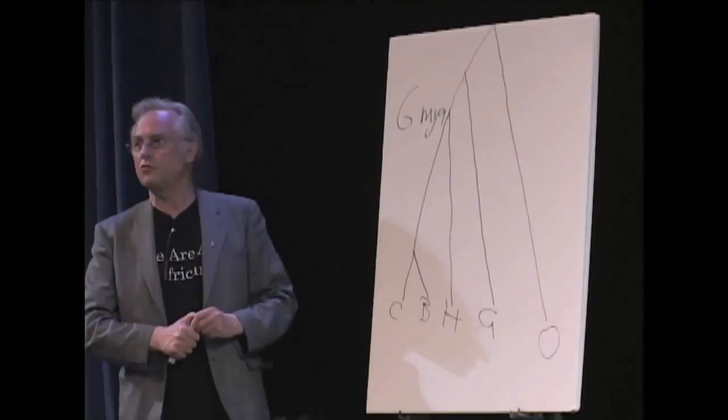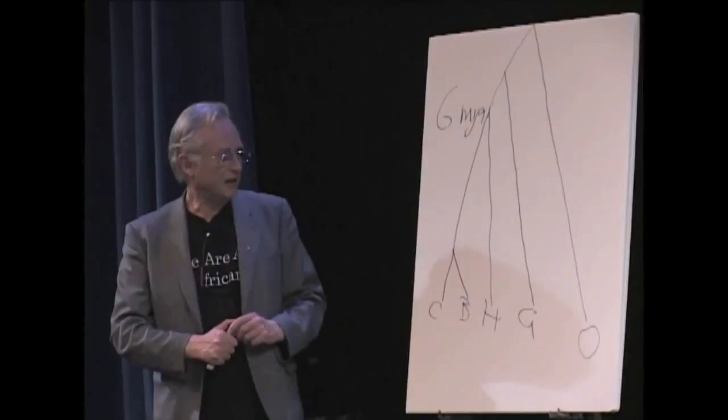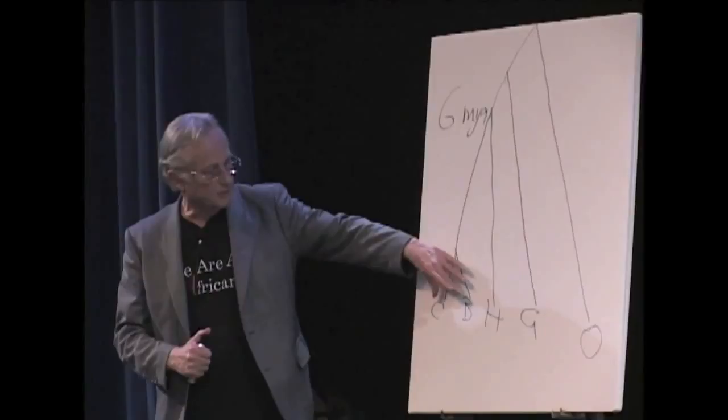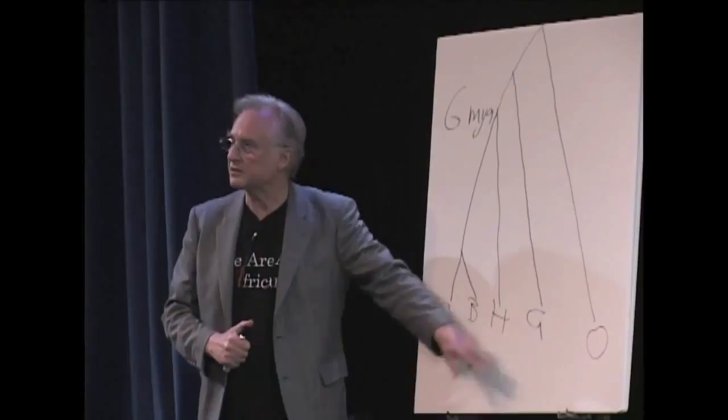Darwin conjectured long before there were any available fossils that the right place to look for human fossils was Africa. He worked that out by pointing out that humans most resemble the other African apes, namely chimpanzees—well, they didn't call them bonobos in those days—and gorillas.